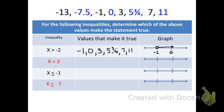The second inequality says x is less than 3. Looking at the possible solutions, negative 13, negative 7.5, negative 1, and 0 are solutions. The value 3 is not a solution because x must be strictly less than 3. When graphing, we use two hash marks at 3 and 0, with 3 on the right side. Since it's less than, we use an open circle at 3, and the arrow heads to the left to show values like negative 13 and negative 7.5.